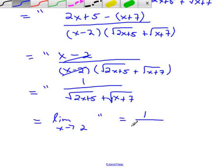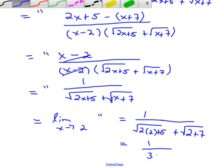1 over square root of 2 times 2 plus 5 plus square root of 2 plus 7. And what does that leave you with? 1 over... What is this going to be? 2 times 2 is 4 plus 5 is 9. Root 9 is 3 plus root 9 is 3. 1 over 6. And you are done.